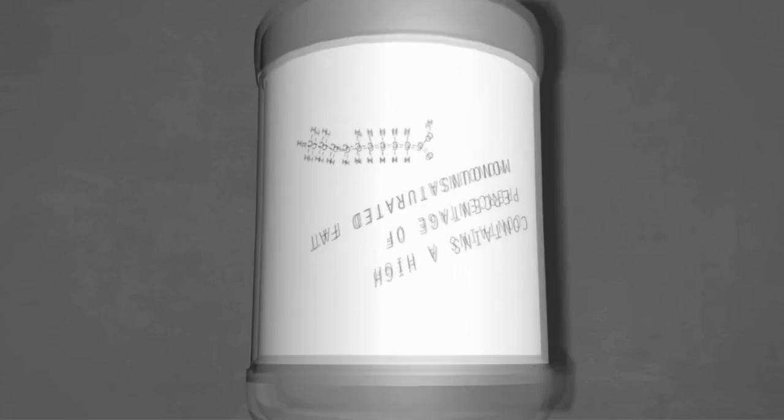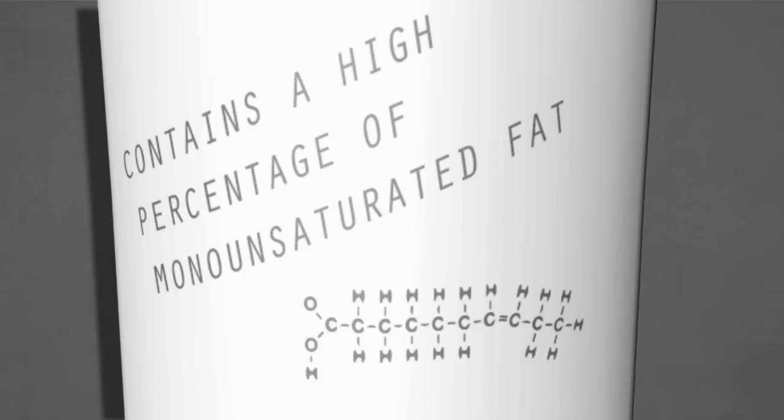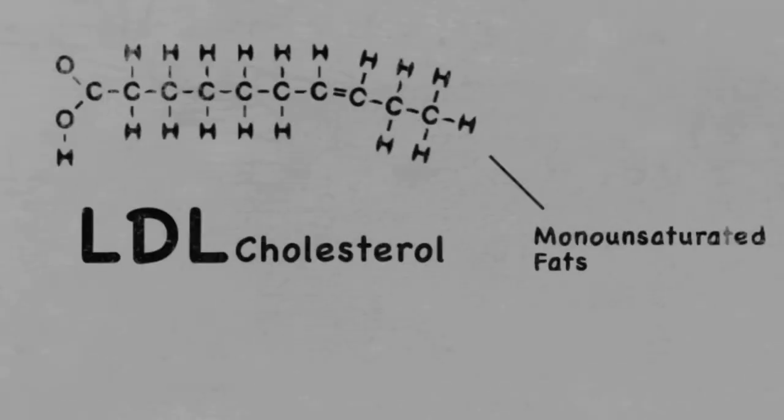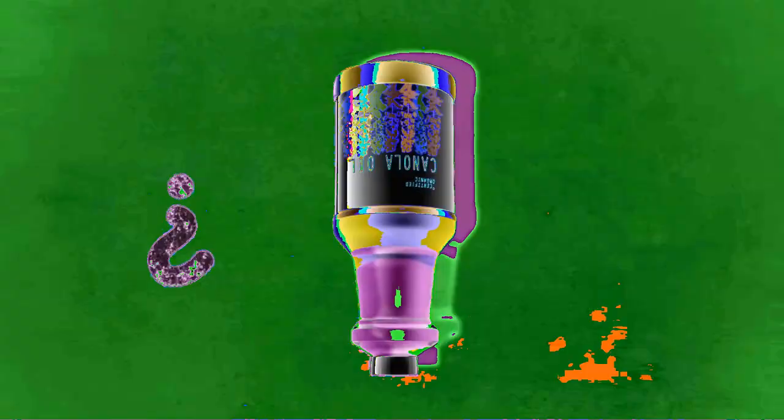That's a distant relative of broccoli. The health benefits of canola include nutritional benefits from the seed. Genetically engineered canola contains monounsaturated fat. That's a distant relative of broccoli and is healthy.